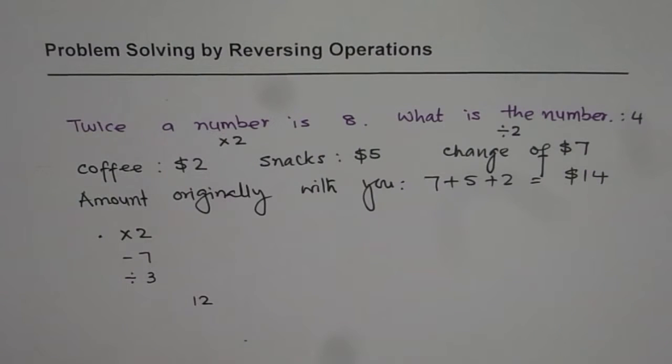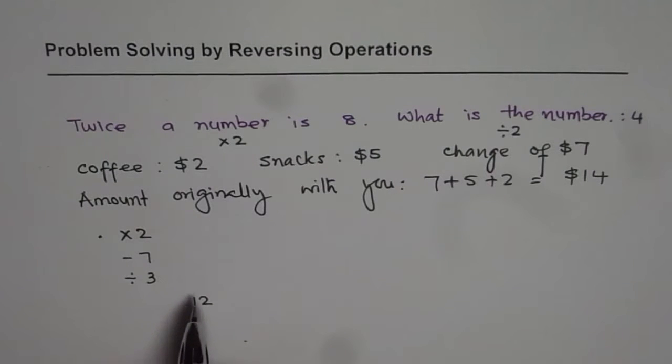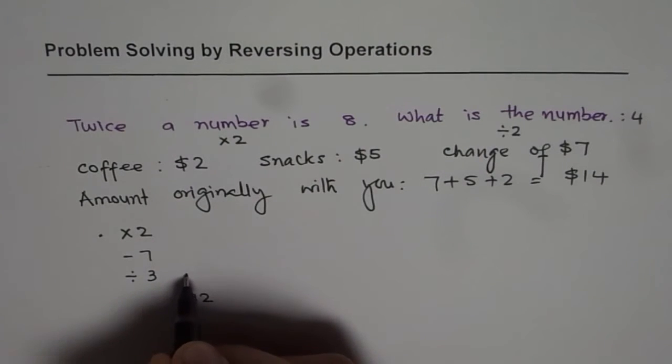To find the original number, we can reverse the whole operation. Let us try to write down. After dividing by 3, we have 12. Let us reverse the operation, multiply this by 3. So, we get 36 here.